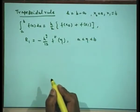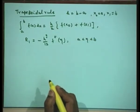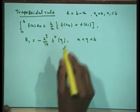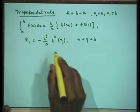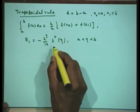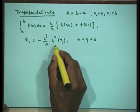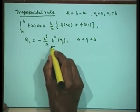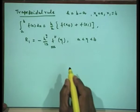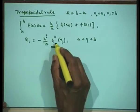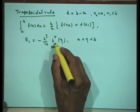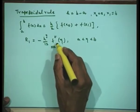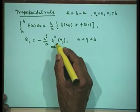From this we concluded that the trapezoidal rule integrates exactly polynomials of degree less than or equal to one. This can be observed because the error term contains the second derivative of f, which vanishes when f(x) is a polynomial of degree less than or equal to one.